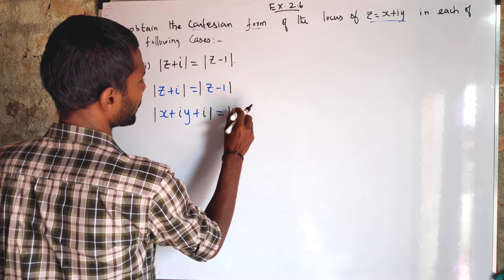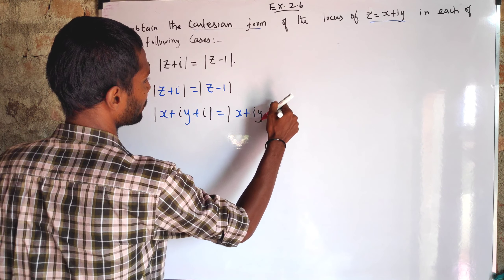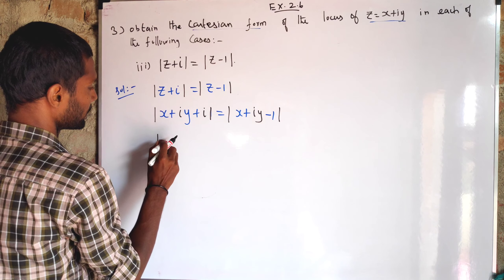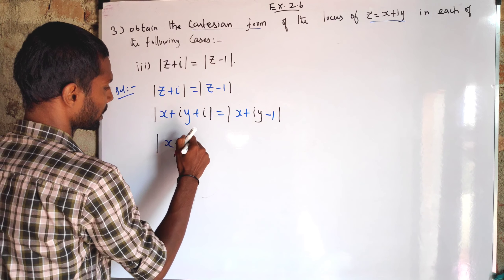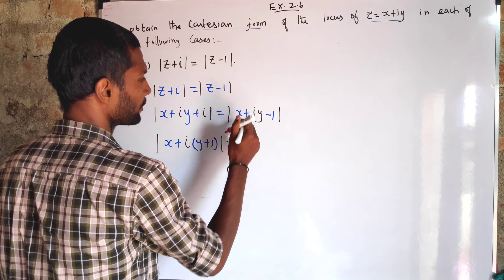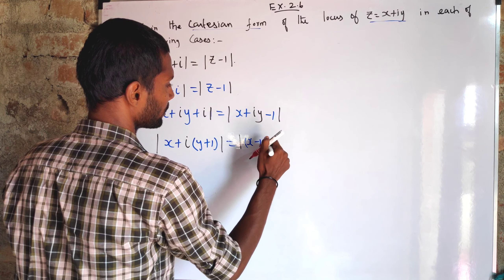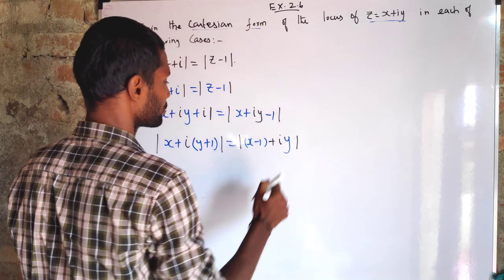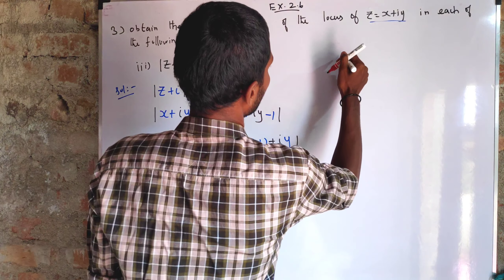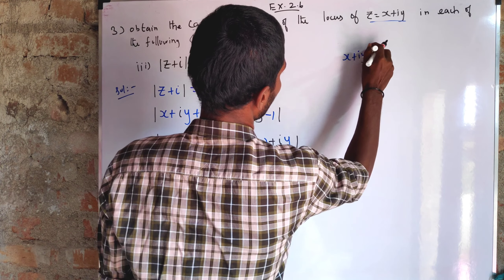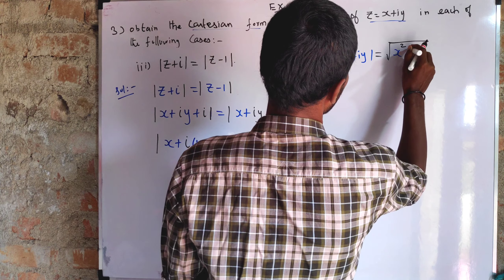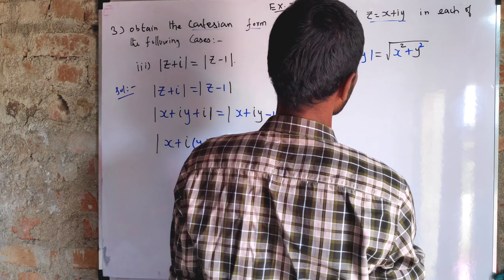Then modulus of x plus iota y minus iota. Collecting real and imaginary parts: modulus of x plus iota times (y plus 1) equals modulus of (x minus 1) plus iota y. We know the modulus formula: square root of real part squared plus imaginary part squared.